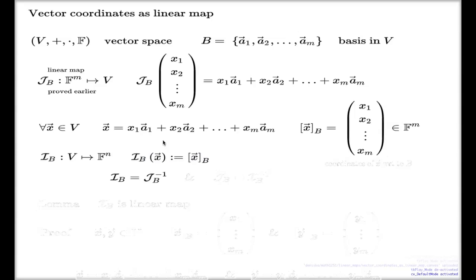I claim two things. I claim that my new mapping, I sub B, is in fact the inverse of J_B mapping. So every time an m-tuple is taken to a vector via J_B, the I_B will take back this vector to the same m-tuple. Quite an obvious observation. And the second observation which I claim is that this new mapping, I_B, is a linear map.